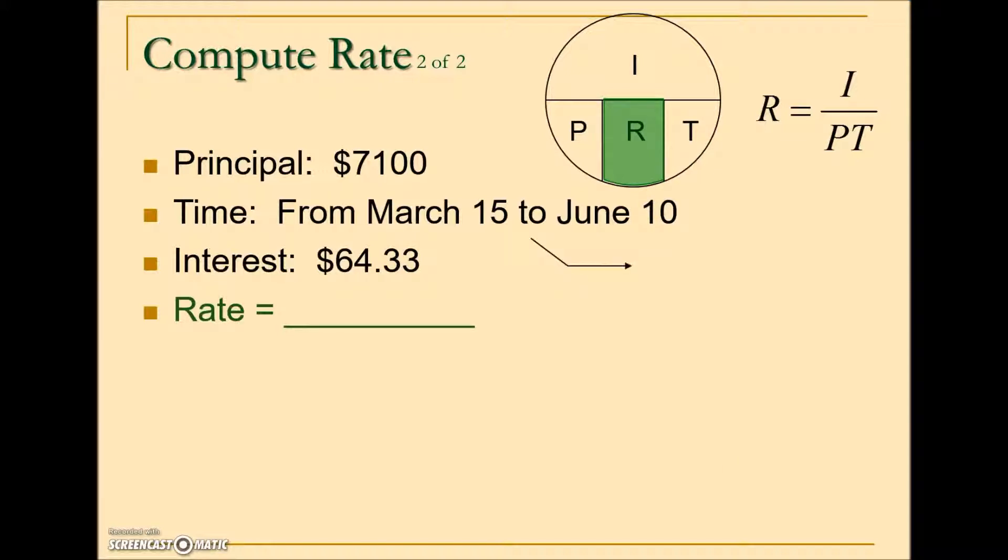So we'll take the later date in the year, which is June 10th. It corresponds with the 161st day. Subtract the earlier date in the year from the start of this loan. March 15th corresponds with the 74th day of the year. When we subtract those, the term or length of this loan is 87 days. This will need to be expressed in terms of a year. So in the numerator we need to have our interest, in the denominator P for principal times T for time expressed in terms of a year.